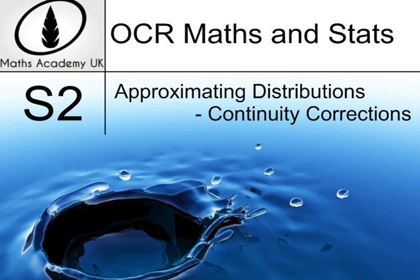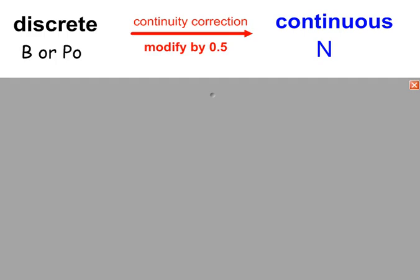Approximating distributions, continuity corrections. If you go from a discrete distribution, so that's the binomial or Poisson,